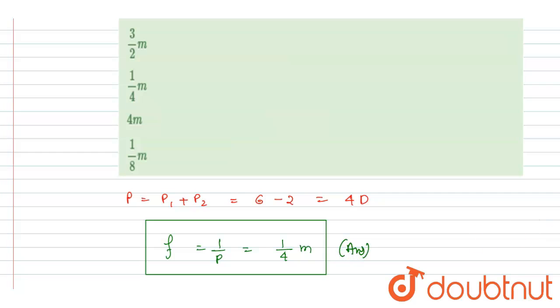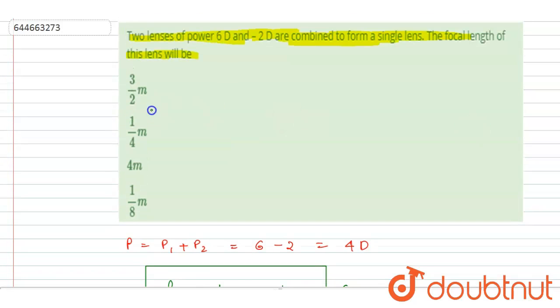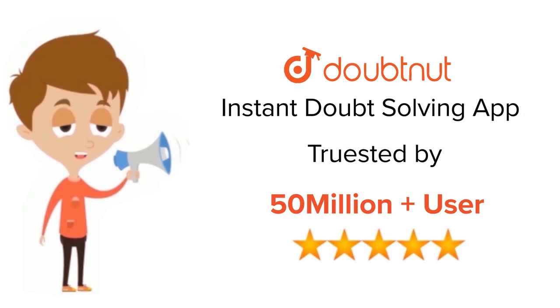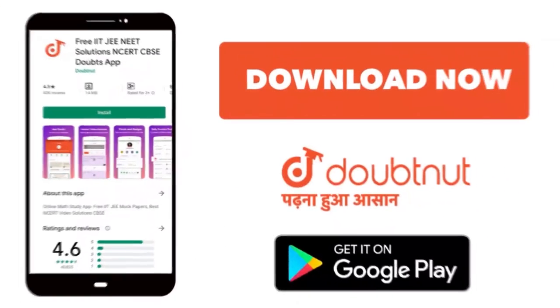So the correct answer will be B. Simple. Thank you. For class 6th to 12th, up to IIT-JEE and NEET level, trusted by more than 5 crore students. Download Doubtnet app today.